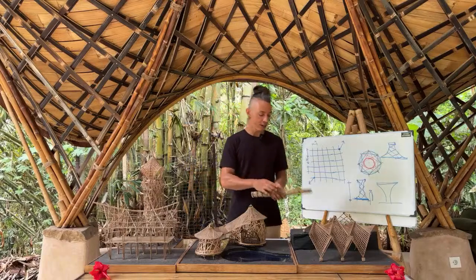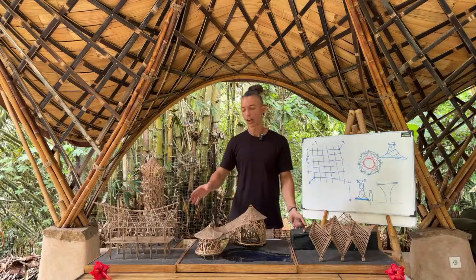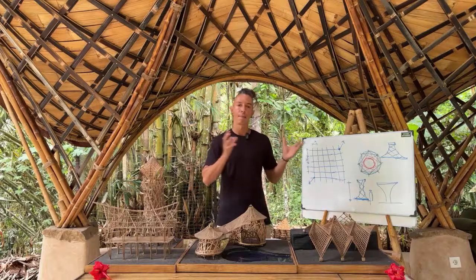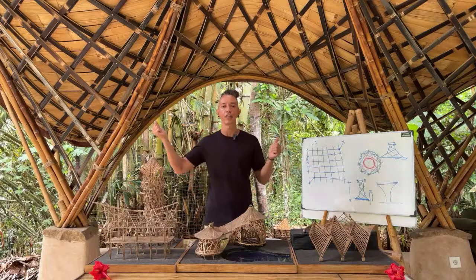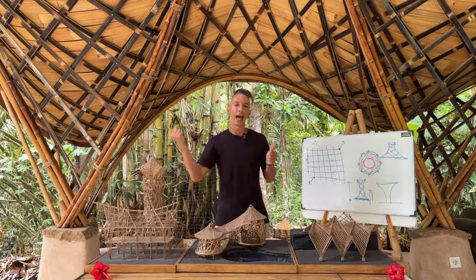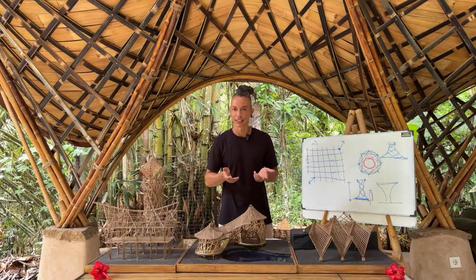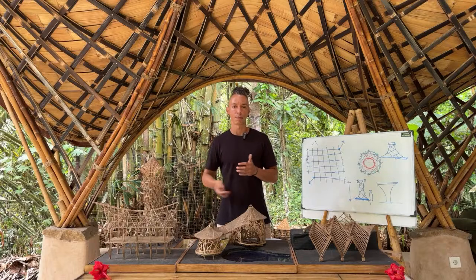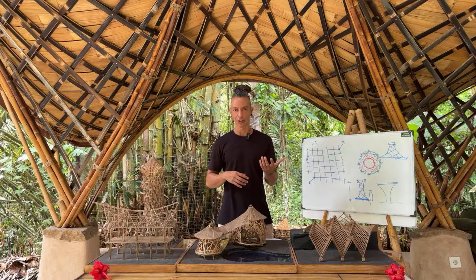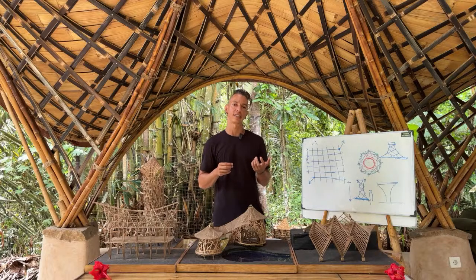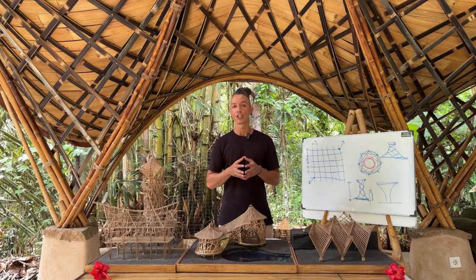So those are four different structural systems I wanted to share, because you can always play with them and mix them. For example, you can use two or three different towers and then have an outline of a post and beam structure — that's how the Heart of School at Green School was built. With this information, you are now able to start dissecting projects and understanding what structural systems were used to make them happen.